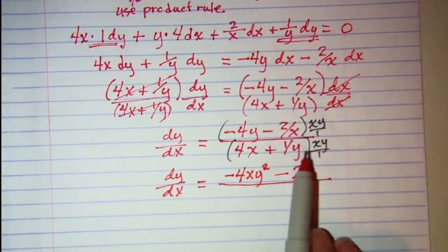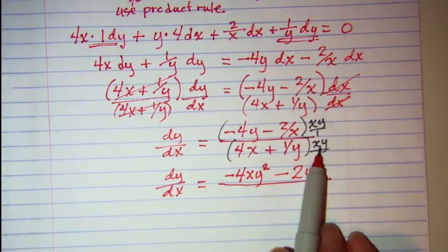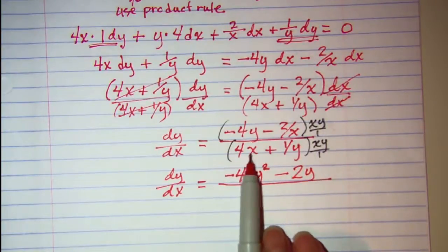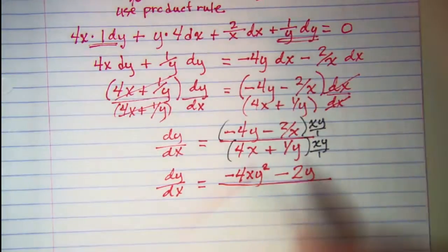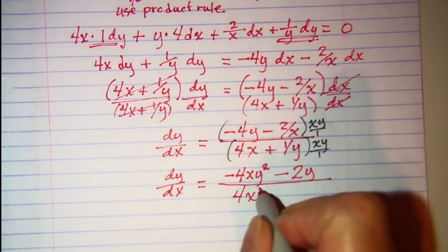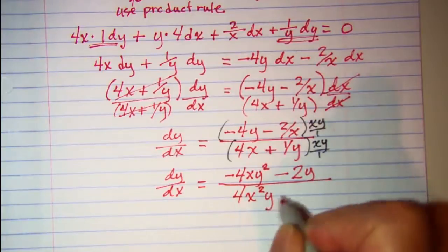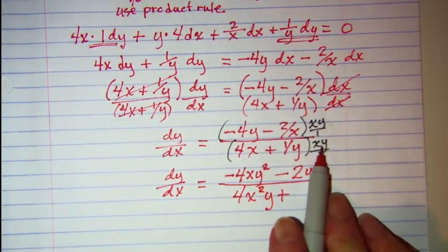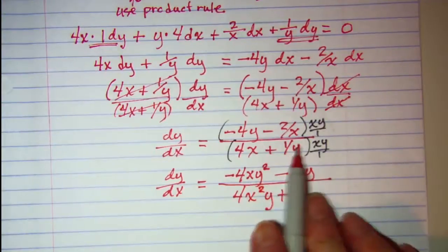Now in the bottom, when I distribute xy to this term nothing is canceling, so I have 4x squared y. And when I distribute xy into this term my y's cancel and I have plus x.